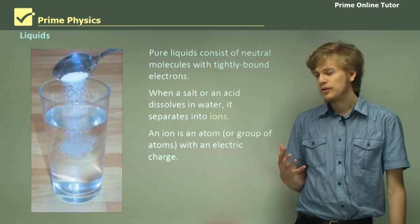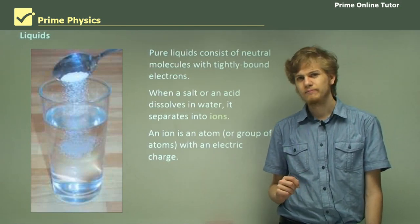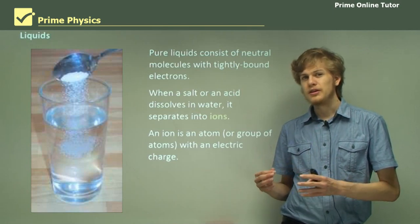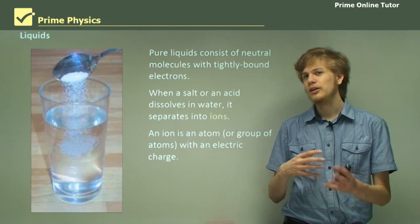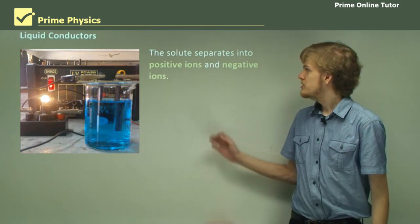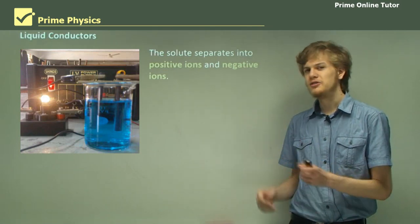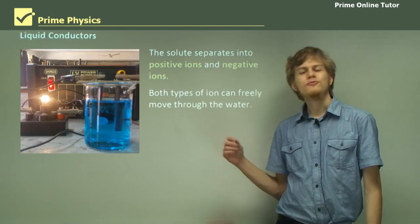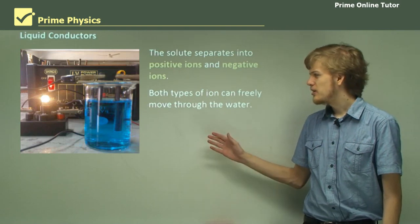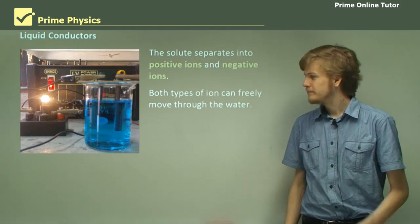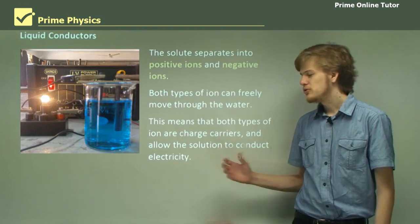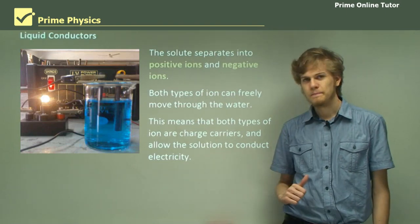An ion is simply an atom or a set of atoms that has an electric charge. In the case of table salt, the sodium ion has a positive charge and the chloride ion has a negative charge. This means that if we take salt as a whole — equal parts sodium and chloride — it's electrically neutral. So the solute, that is the thing that we dissolve, separates into positive ions and negative ions, assuming that it was uncharged in the first place. Both types of ion are freely able to move through the water, which means that they can act as charge carriers. We can see in this photograph that we have a container filled with blue liquid that is conducting electricity. So both the positive ions and the negative ions are able to carry charge through the liquid and allow the solution to conduct electricity.